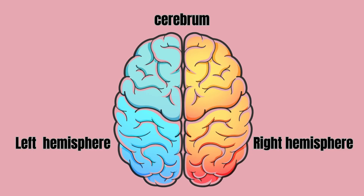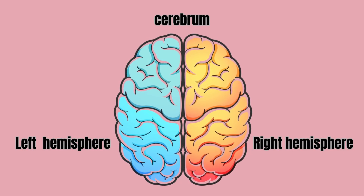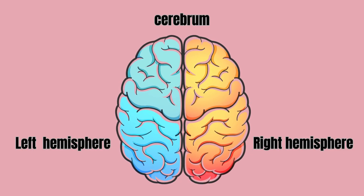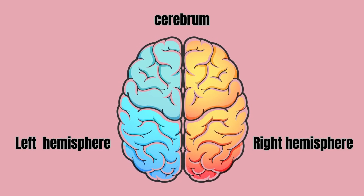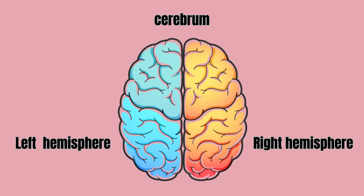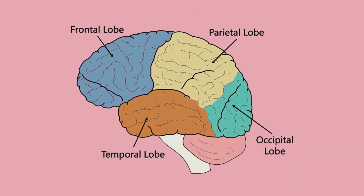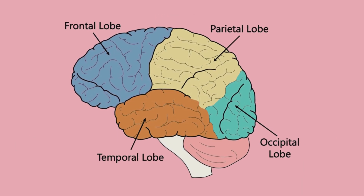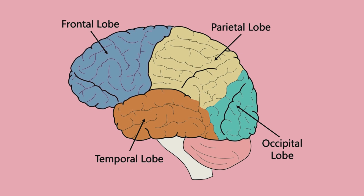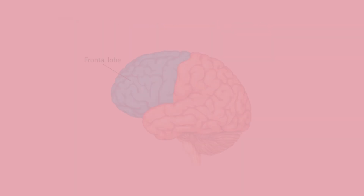The largest part of the brain, the cerebrum, is divided into left and right hemispheres. It's further split into four lobes, each with specific functions.